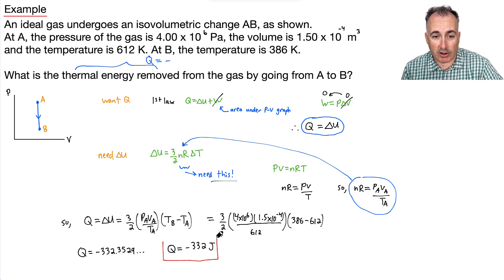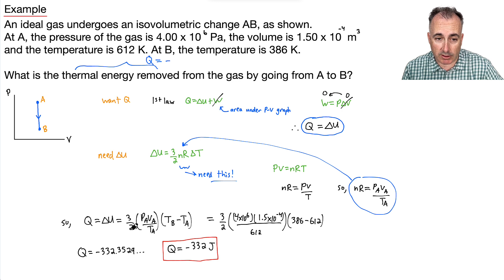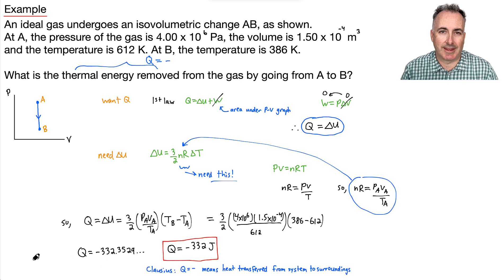This is the thermal energy that's been removed, because remember, Q was equal to delta U. So if we remember our Clausius conventions, the fact that Q is negative tells us that thermal energy, or heat, has been transferred from the system to the surroundings.